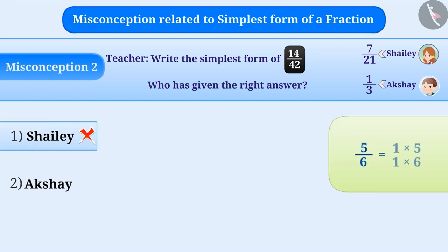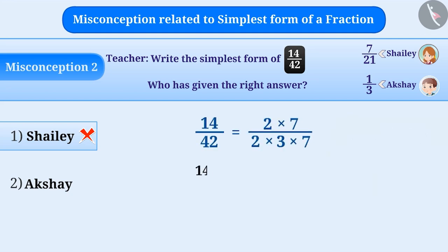In any fraction, if only 1 is the common factor of the numerator and the denominator, then it is called as the simplest form of the fraction. To obtain the simplest form, we will first find the HCF of the numerator and the denominator. Here, the HCF is 14.